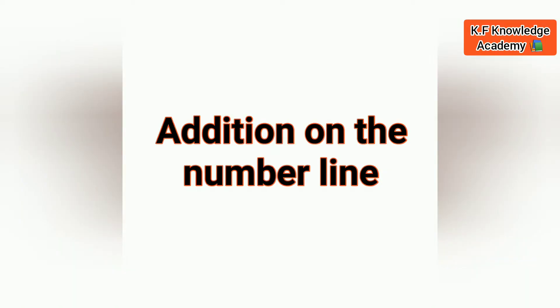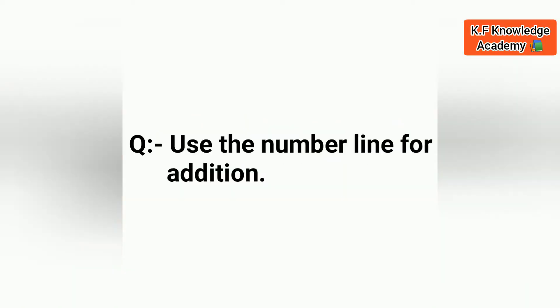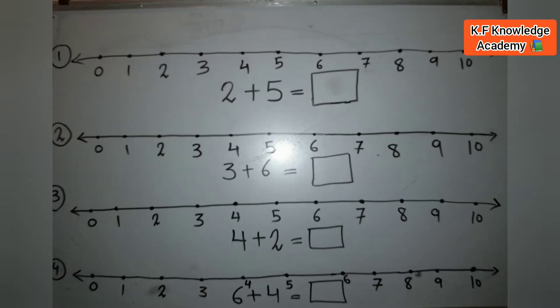Today we will see the addition on the number line. The first question is: use the number line for addition. This is called the number line — there are numbers given from 0 to 10. First of all, there is given 2 plus 5 is equal to?